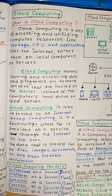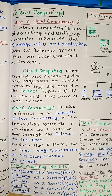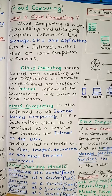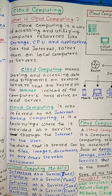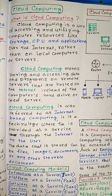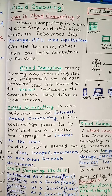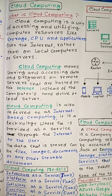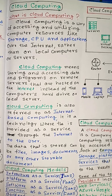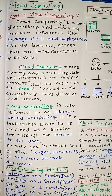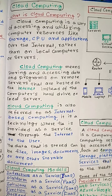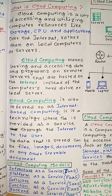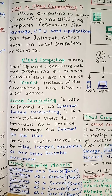Cloud computing is a way of accessing and utilizing computer resources like storage, CPU and applications over the internet rather than on local computers or servers. Cloud computing means storing and accessing data and programs on remote servers that are hosted on the internet instead of the computer's hard drive or local server. Cloud computing is also referred to as internet-based computing.